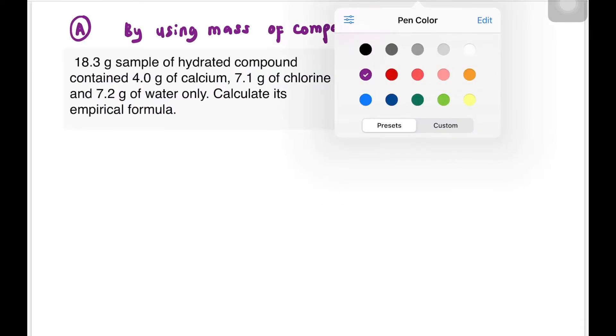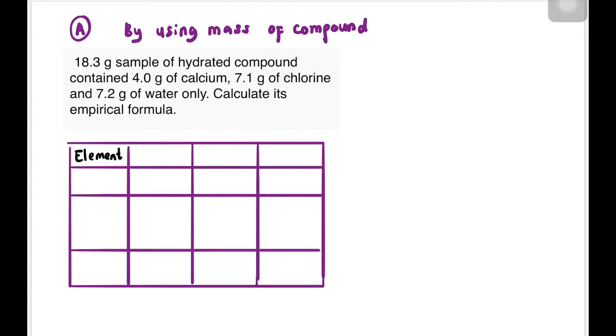Let's look at the first example for mass of compound. Usually this refers to questions about hydrated compounds. The tip is to always create a table like this and list EMAMORA - that's the acronym for element, mass, moles, and ratio or simplest ratio. When we read the question, the elements in this compound are Ca, Cl, and H2O. H2O is considered as one component.